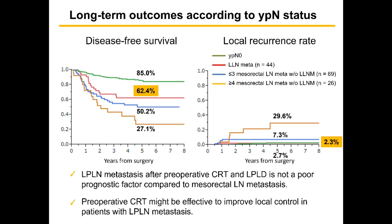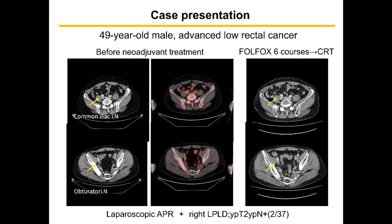Preoperative CRT might be effective to improve local control in patients with lateral lymph node metastasis. I'd like to show the 4K video. This case was a 49-year-old male with advanced lateral lymph node metastasis. This patient had swollen right common iliac and obturator lymph nodes. After 6 courses of FOLFOX and CRT, the lateral lymph nodes decreased in size but remained. We performed laparoscopic APR and right lateral lymph node dissection. Pathological examination showed two residual cancer cells in the common iliac and obturator lymph nodes.